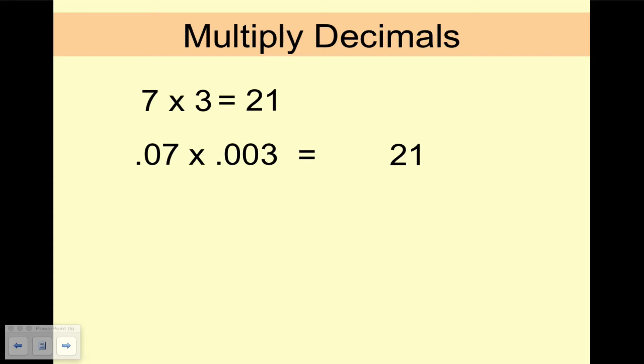So multiplying 0.07 times 0.003, we're still just multiplying 7 times 3. Those are the numbers that are there. It equals 21. But we have to count decimal places. So 0.07, how many decimal places does that have? That's right, 2 places.